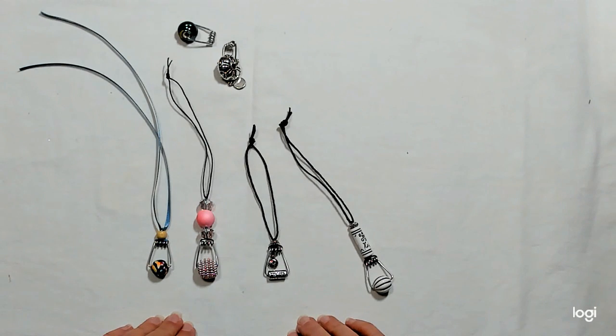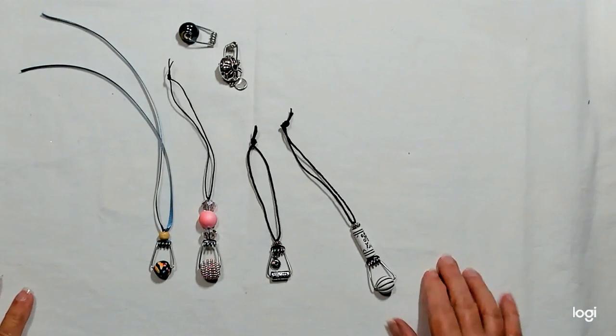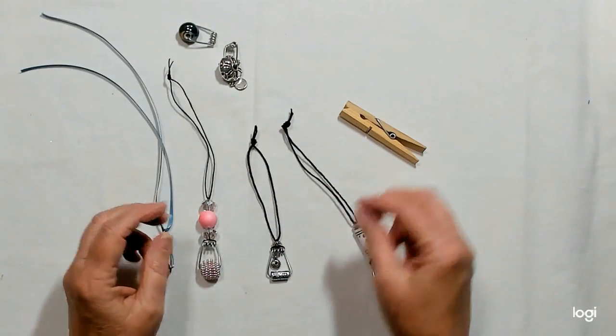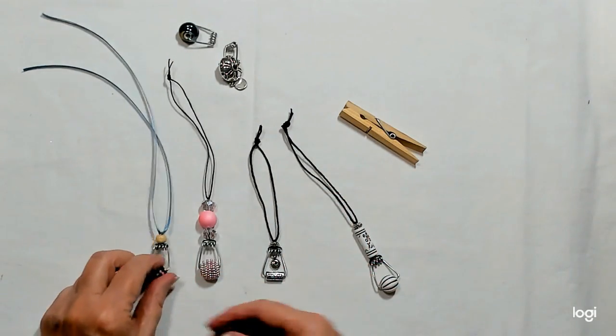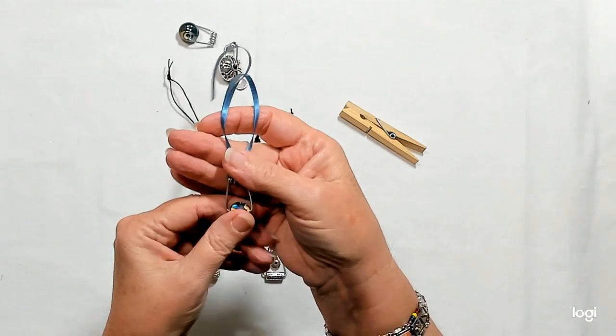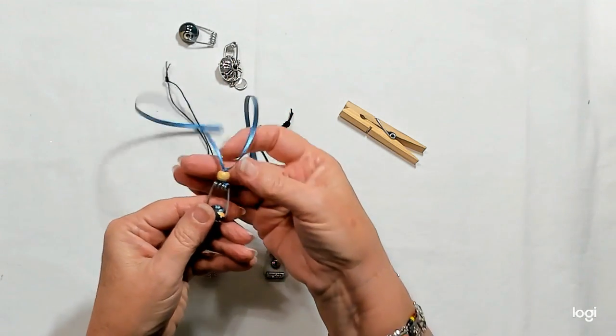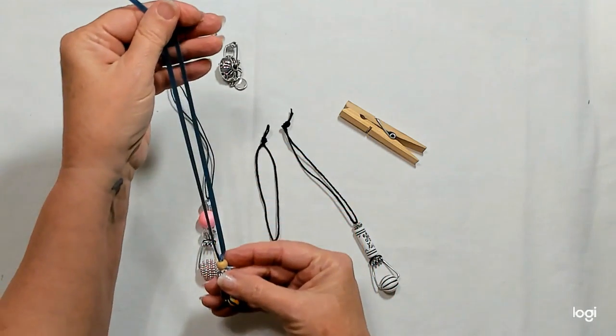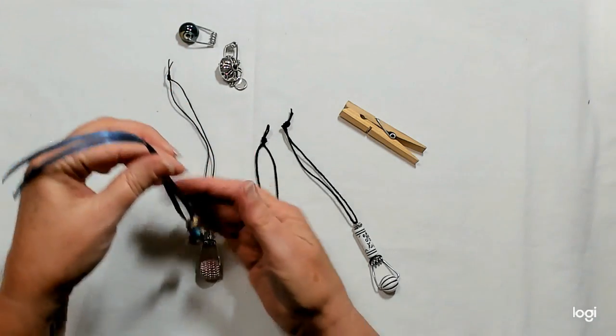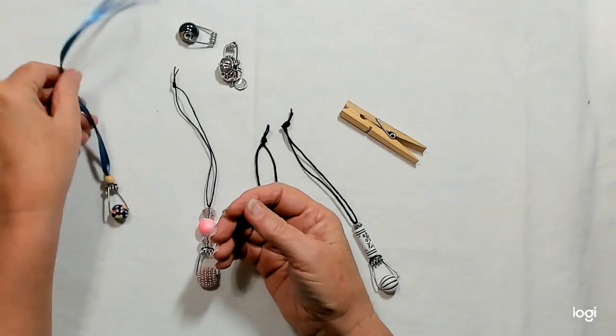I just thought I would show you these cute little dangles, charms, tassel charm dangles, whatever you want to call them, using the hinges from clothespins. I just use this little part right here. I'll show you the ones I made first. This one I just used a little clay bead that I bought from a bead store and then a little wooden bead, and I used just a little ribbon. You could make a necklace out of this or tie it on the side of your journal or put it on a keychain.